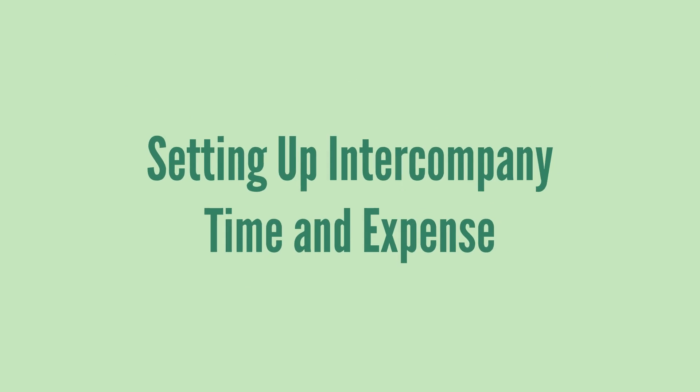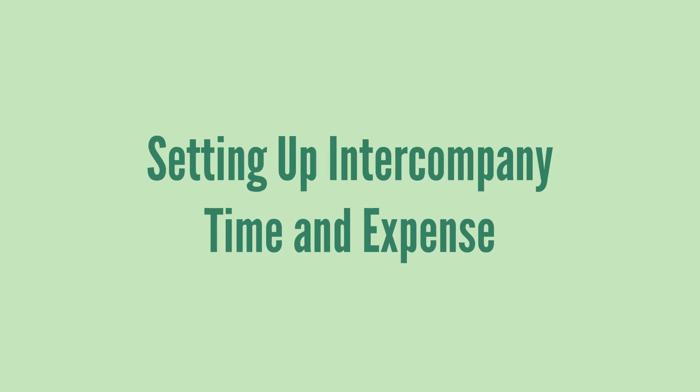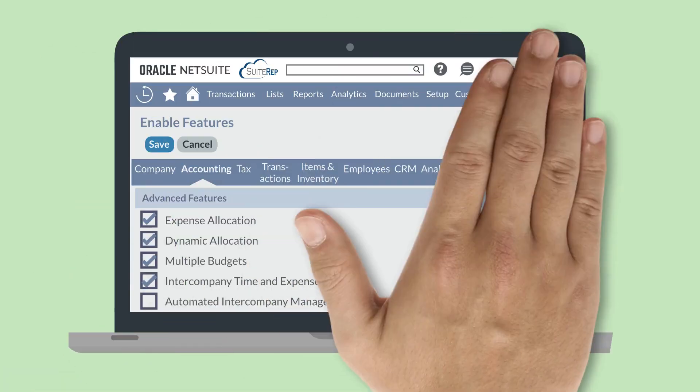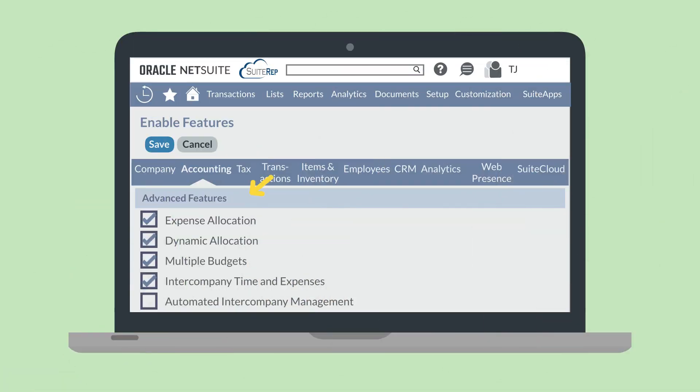To set up Intercompany Time and Expense, first you'll need to enable the feature. You can turn on this feature under the Advanced Features section of the Accounting tab in Enable Features.